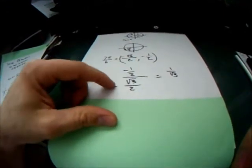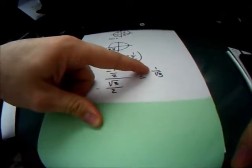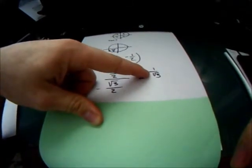These negatives cancel, the 2's cancel, so the simplified form is 1/√3.